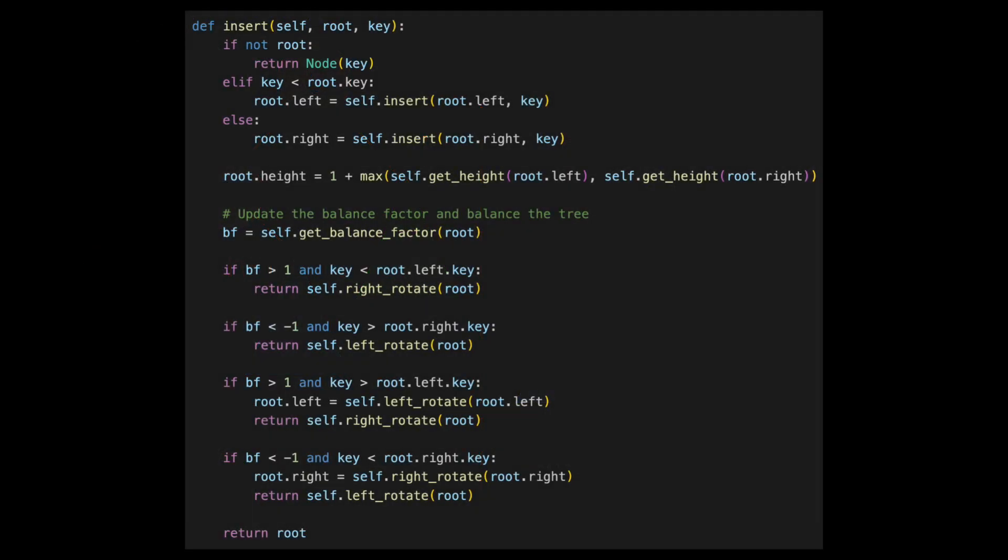We start at the top of the tree, at the root. We always add a node as a leaf. So we check if we reached a nil node. If so, we return a new node with the specified key. If we haven't reached a nil node, we need to find the correct place in the tree by comparing the specified key with the key of the node we're currently visiting.